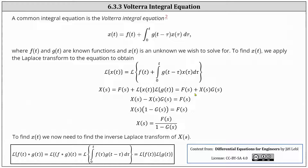And now we need to solve the equation for big X of s. To do this, we subtract big X of s times big G of s on both sides of the equation, and then factor out big X of s on the left, which gives us big X of s times the quantity one minus big G of s equals big F of s. Then we divide both sides by one minus big G of s, which gives us big X of s equals big F of s divided by the quantity one minus big G of s. To find x of t, we need to take the inverse Laplace transform of both sides.